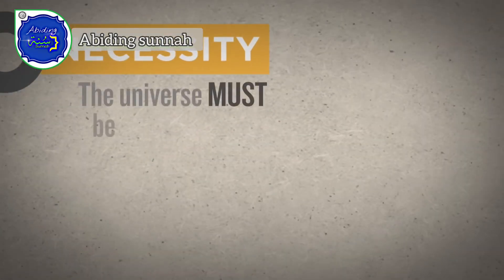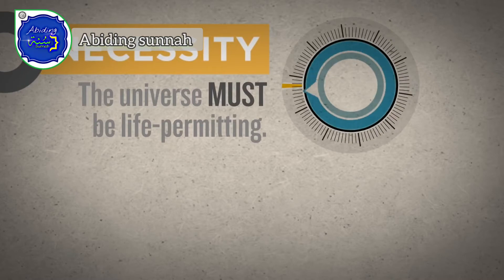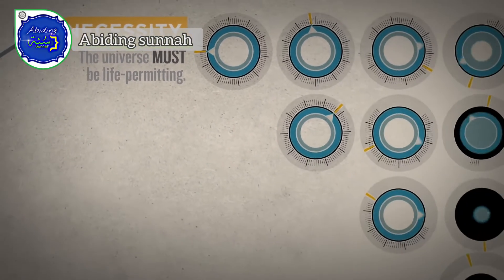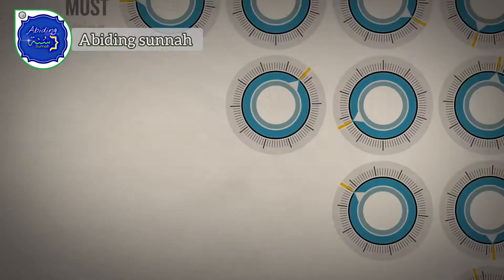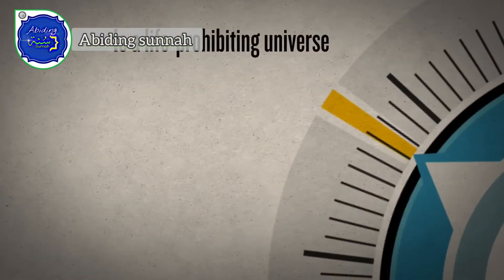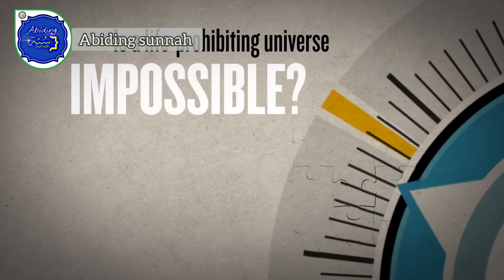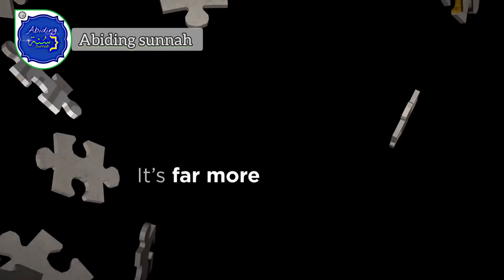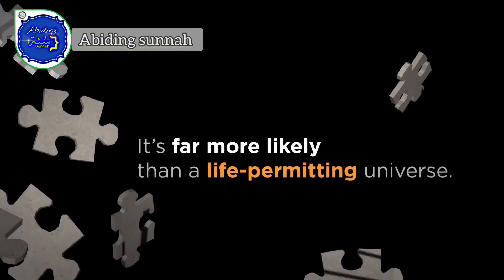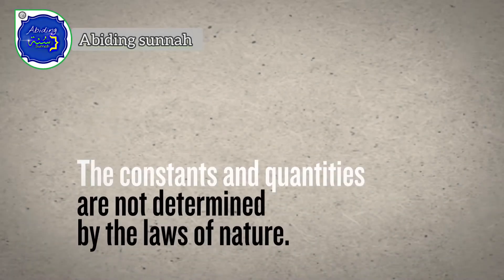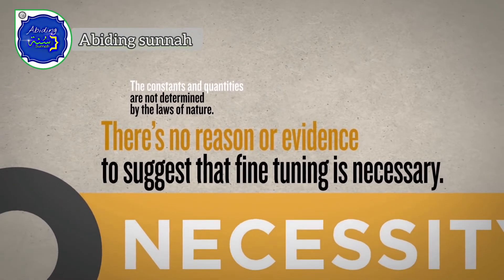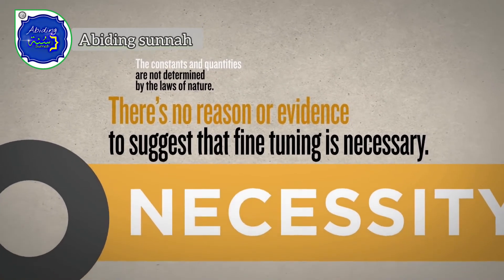Could the universe must be life-permitting — that the precise values of these constants and quantities could not be otherwise? But is this plausible? Is a life-prohibiting universe impossible? Far from it. It's not only possible, it's far more likely than a life-permitting universe. The constants and quantities are not determined by the laws of nature. There's no reason or evidence science suggests that fine-tuning is necessary.